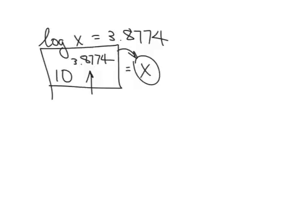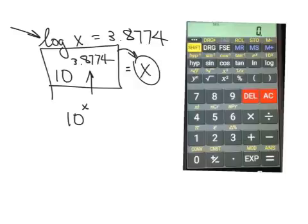Alright, so different calculators are different, have different keys. But in order to do this, you should have a key that looks like this. And it actually should be this key. Okay, let me see if I can put a picture on here. Okay, so here's a picture of my phone. And see, I have a log key right there. And then I have this key right there that's in my shift. Alright, so what you're going to do then is you put your number, 3.8774. And then click that button.